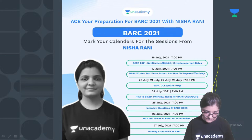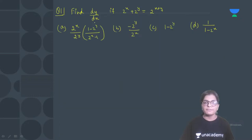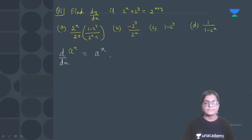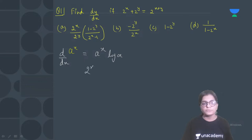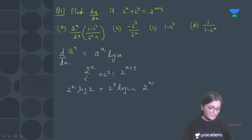Let's move to the question. This is question number one: Find dy/dx if 2^x + 2^y = 2^(x+y). To solve this question, as I told you in the last video, the formula that will be used is: the derivative of a^x is a^x · log a. So if we apply this to the equation 2^x + 2^y = 2^(x+y), we get the corresponding derivative terms on both sides. For the right-hand side, since 2^(x+y) = 2^x · 2^y, we write it in that open form, and x+y gives us the product.